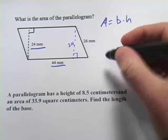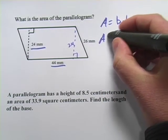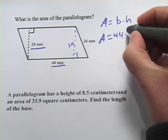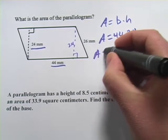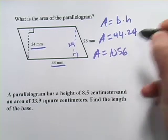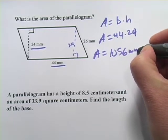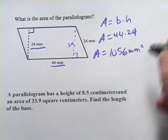Well, once we have the height and the base, the rest of this is pretty easy. It's simply 44 times 24, and that is 1056. And since this is area, it's going to be squared units, so this is square millimeters.